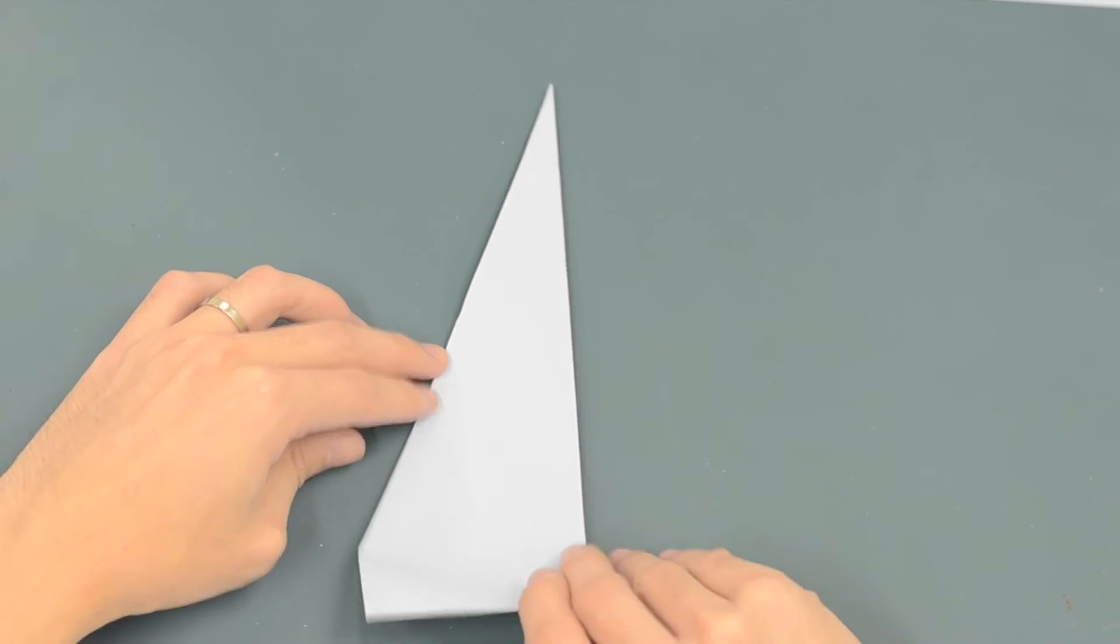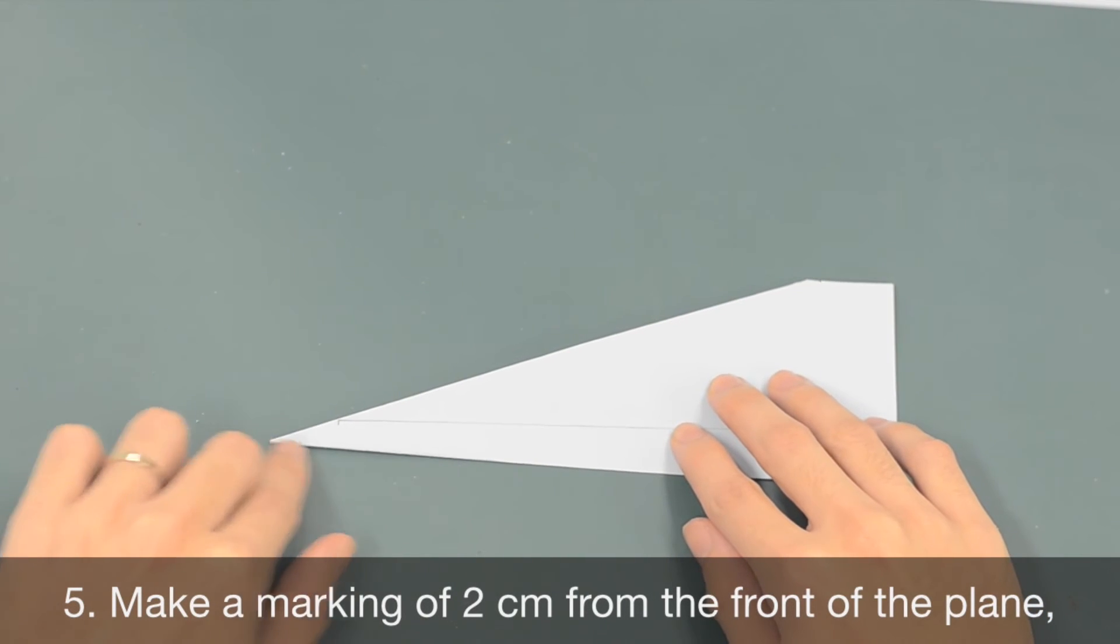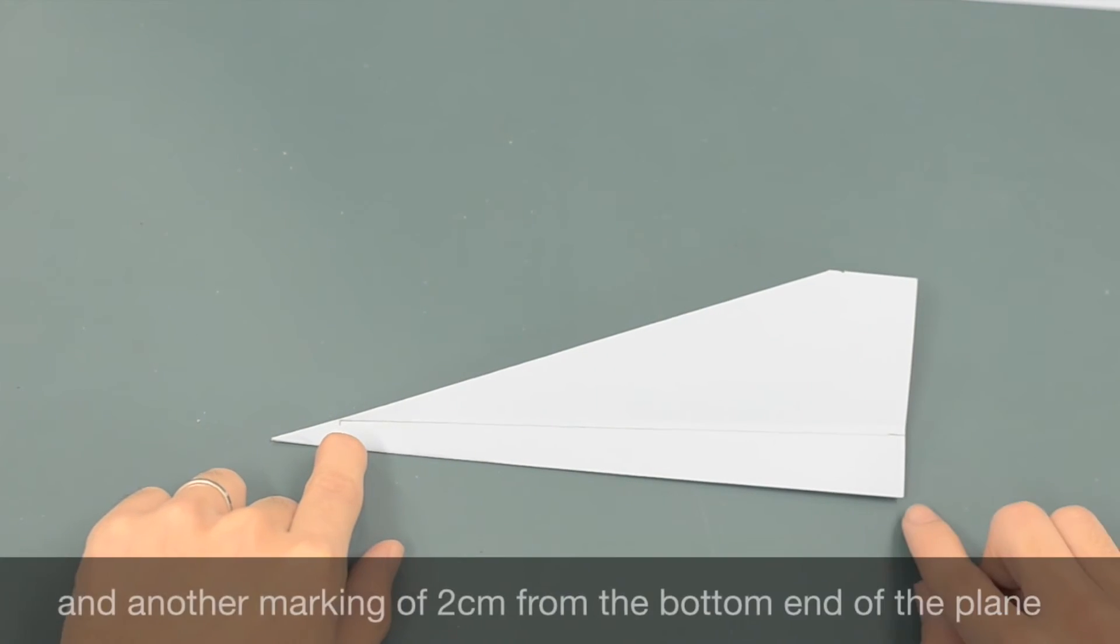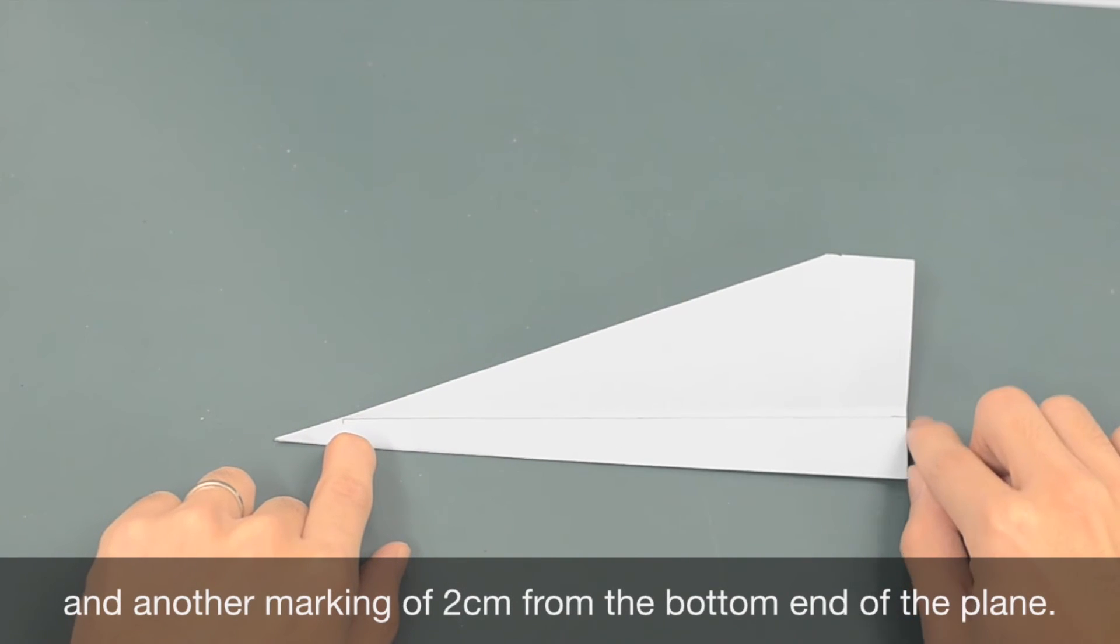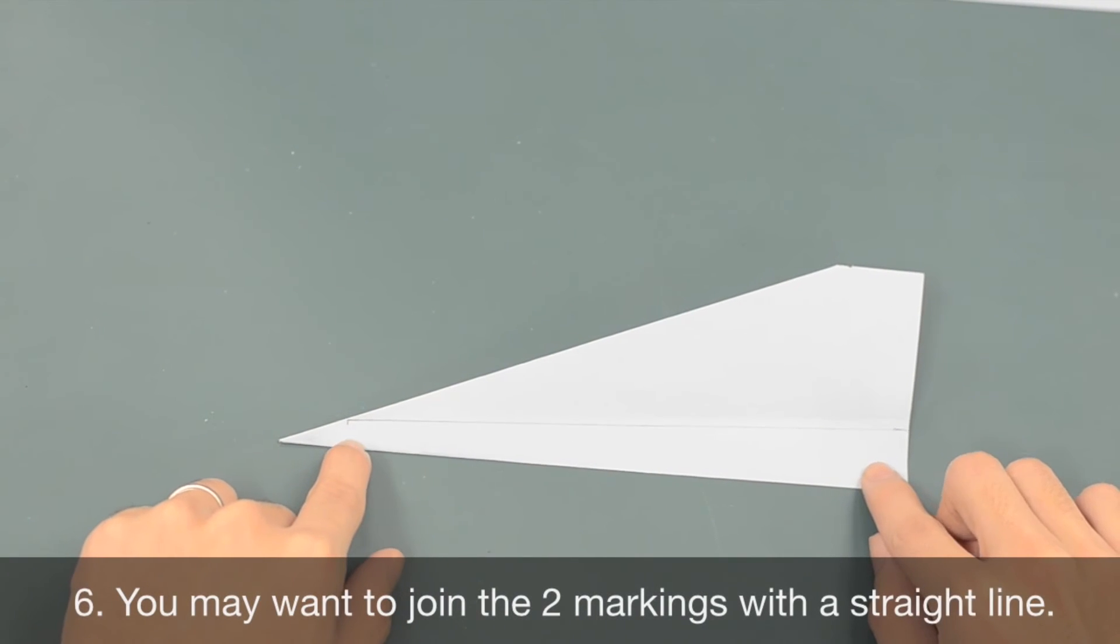What you need to do next is to make a marking of about 2cm from the front of the plane, and make a marking of 2cm from the bottom end of the plane. You can use a pencil to join these two markings together.